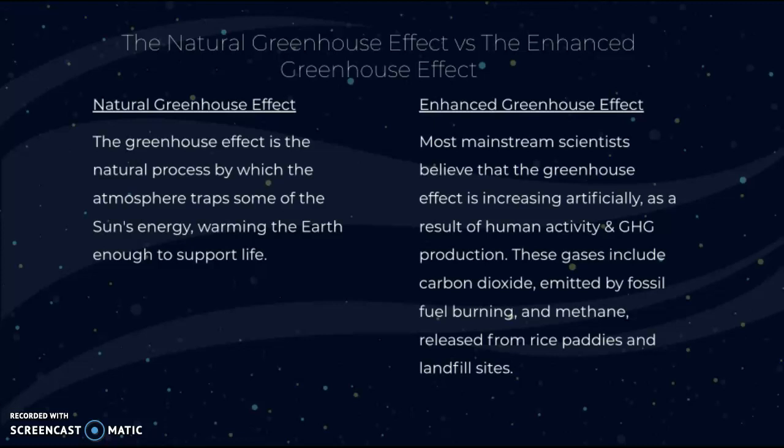First, we're going to distinguish between the natural greenhouse effect and the enhanced greenhouse effect. The natural greenhouse effect is the natural process by which the atmosphere traps some of the sun's energy, warming the earth to support life — that was covered in a previous video. The enhanced greenhouse effect is where most mainstream scientists believe the greenhouse effect is increasing artificially as a result of human activity and greenhouse gas production, amplifying natural warming to unnatural levels.